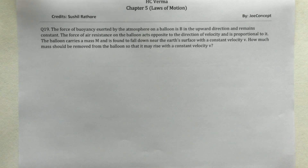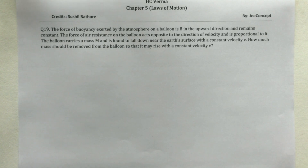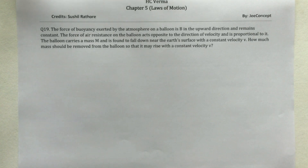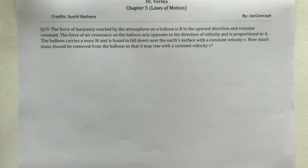Hello friends, this is the solution video for question number 19, chapter 5, H.C. Verma. The problem statement says: the force of buoyancy exerted by the atmosphere on a balloon is B in the upward direction and remains constant. The force of air resistance on the balloon acts opposed to the direction of velocity and is proportional to it. The balloon carries a mass M and is found to fall down near the earth's surface with a constant velocity V. How much mass should be removed from the balloon so that it may rise with a constant velocity V?